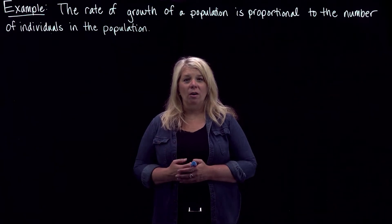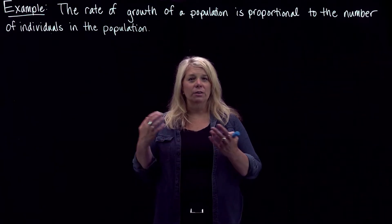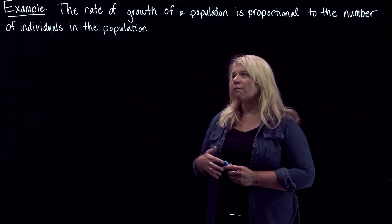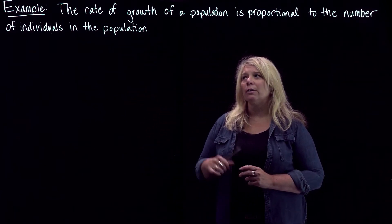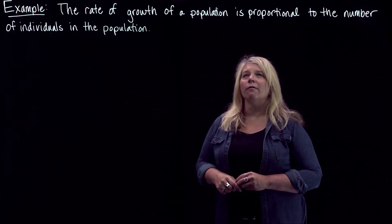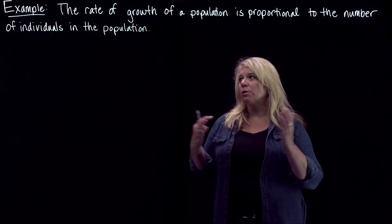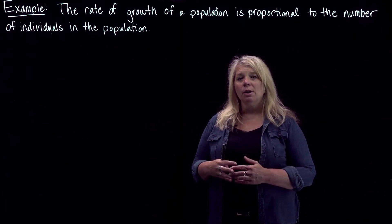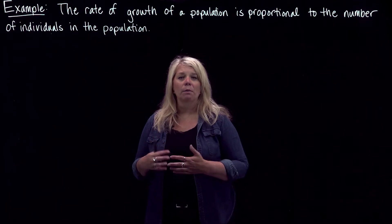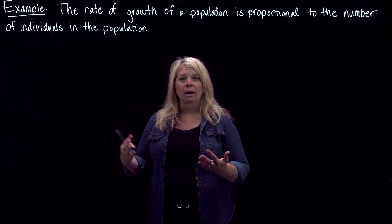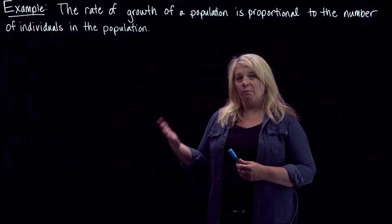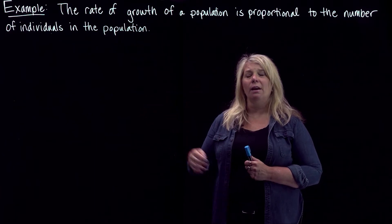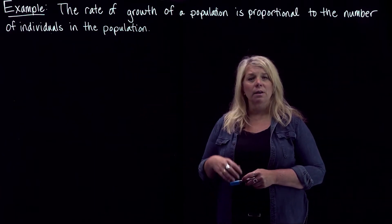We're going to look at creating a mathematical model to describe a situation. For this first example, we are going to assume that the rate of growth of a population is proportional to the number of individuals in the population. We want to create this mathematical model and also exhibit the good practices we talked about in the previous video for creating mathematical models.